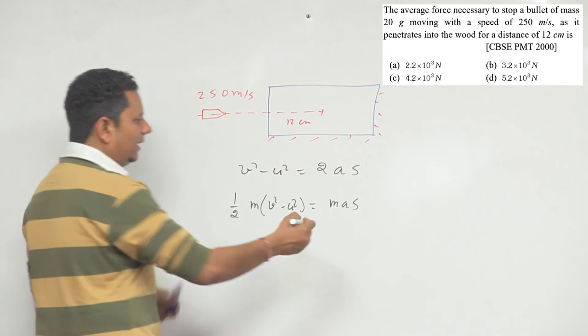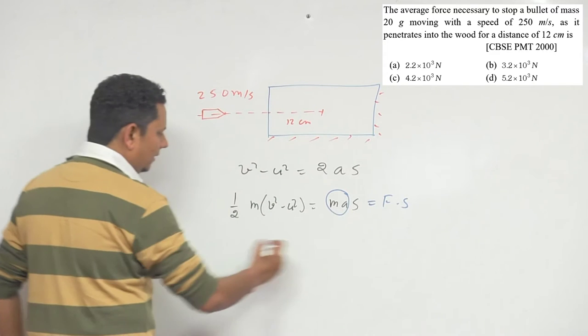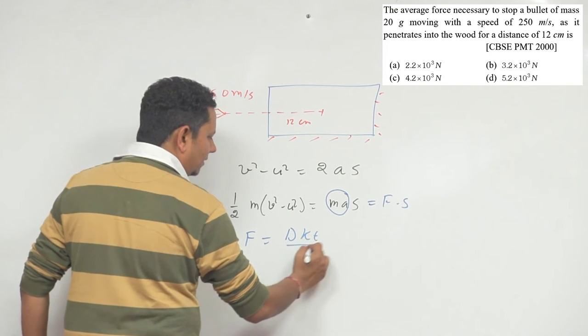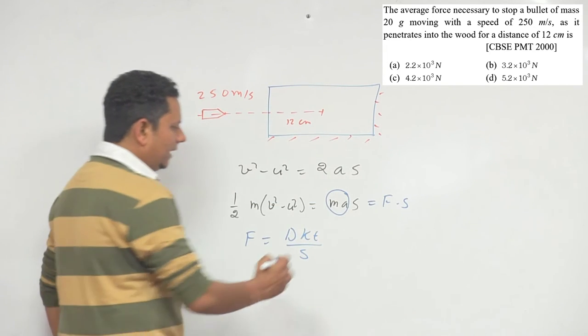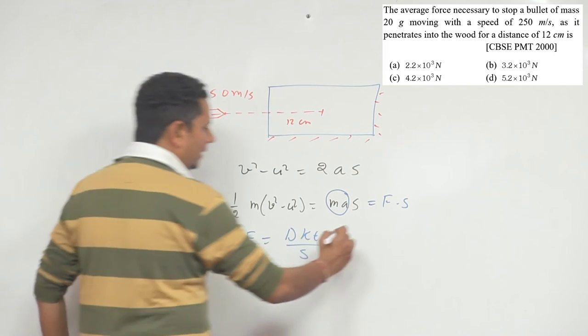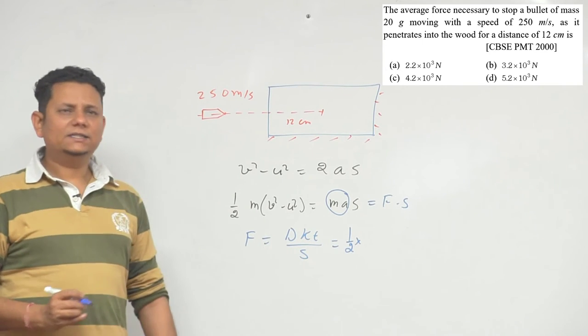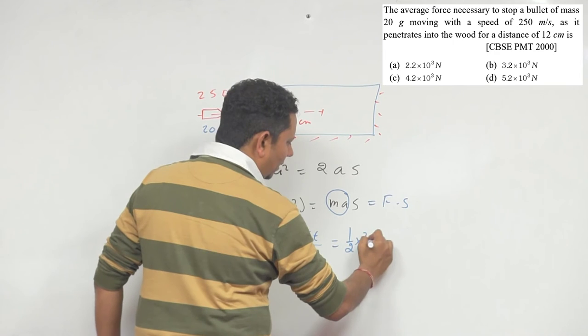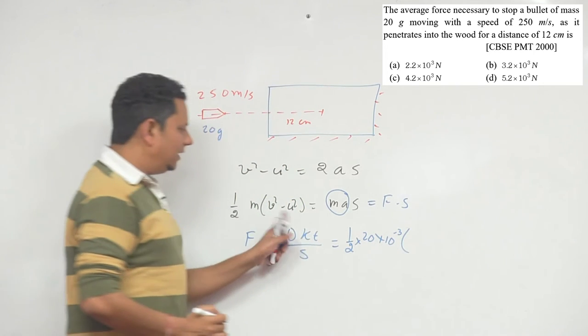So yahaan pe hume yeh batana hai, is force ki value kya hoyegi. So is ko aap F into s bhi lih sakte hai. Iske basis pe, hum kya hai sakte hai, force will be equal to delta kinetic energy divided by displacement. Us s ko hum niche liya hai. Data aapne ko de rakha hai, hum se value nikal ni hai. So change in kinetic energy ko aap likhenge, half multiplied by m. M iska jo hume mass diya hua, that is 20 gram. So half multiplied by 20 into 10 to the power minus 3.